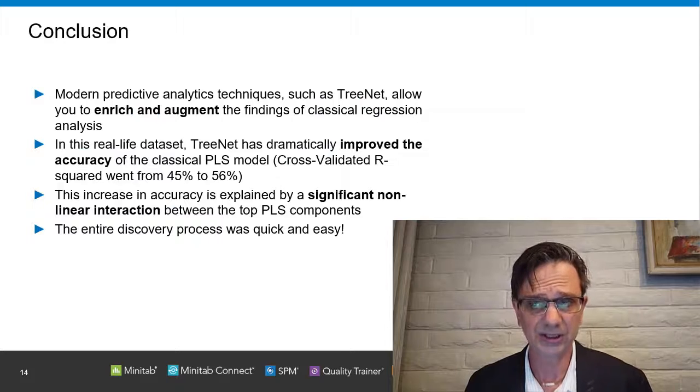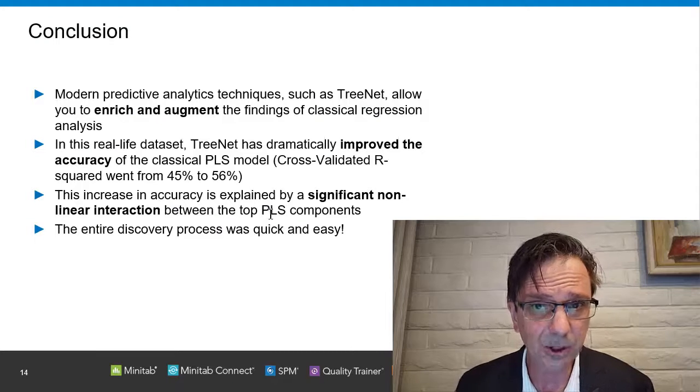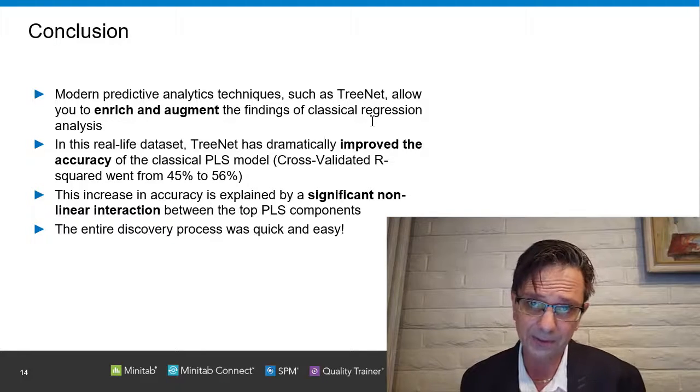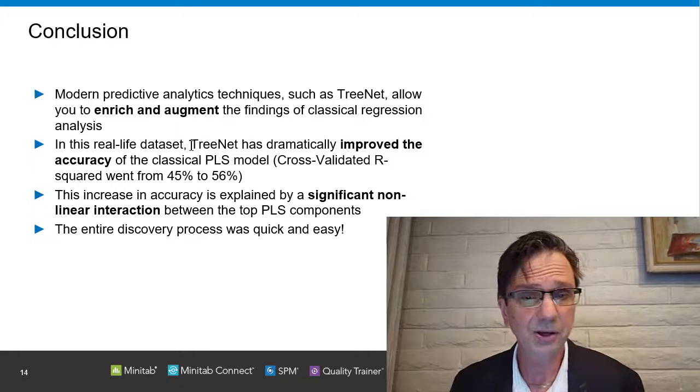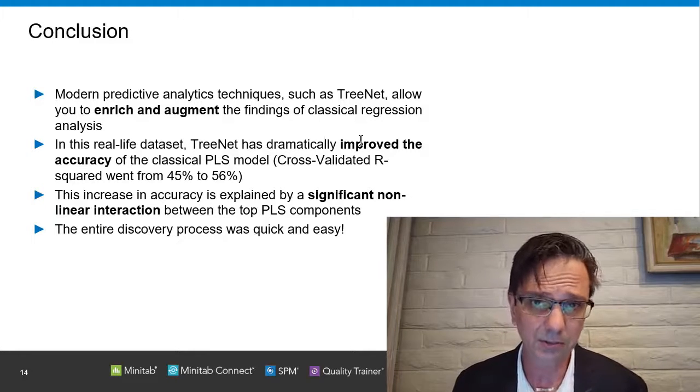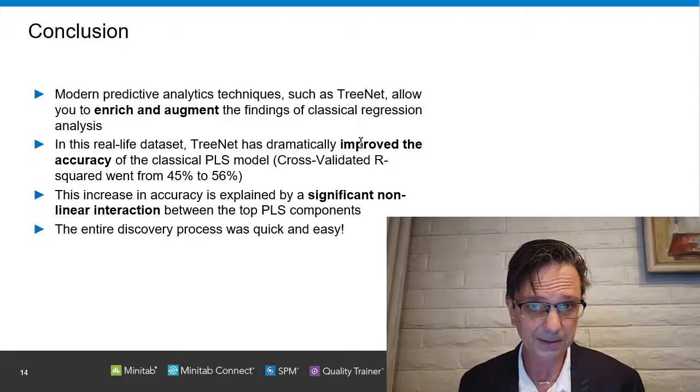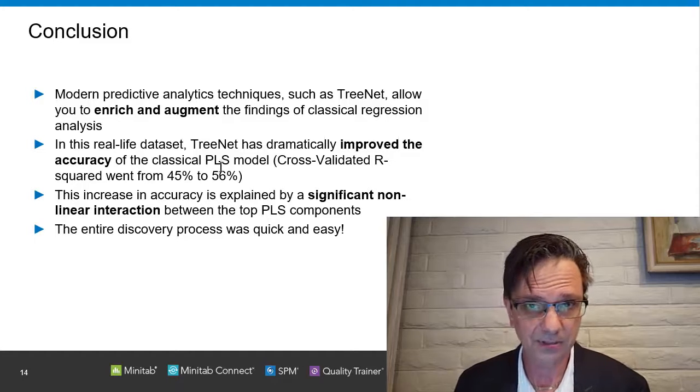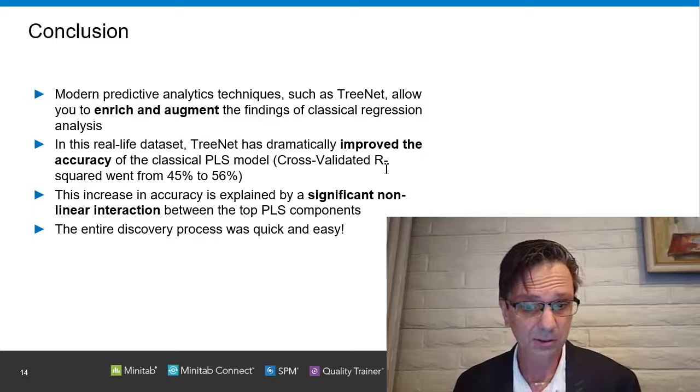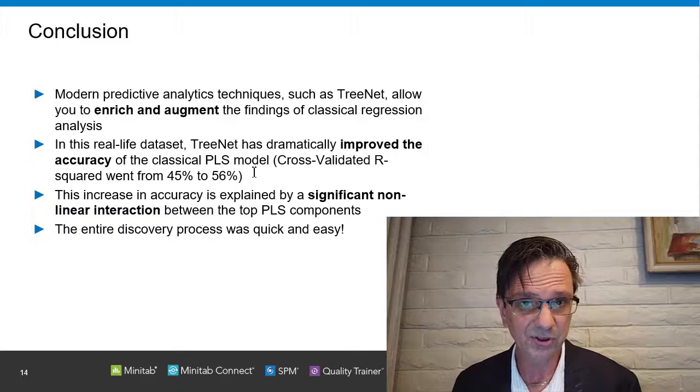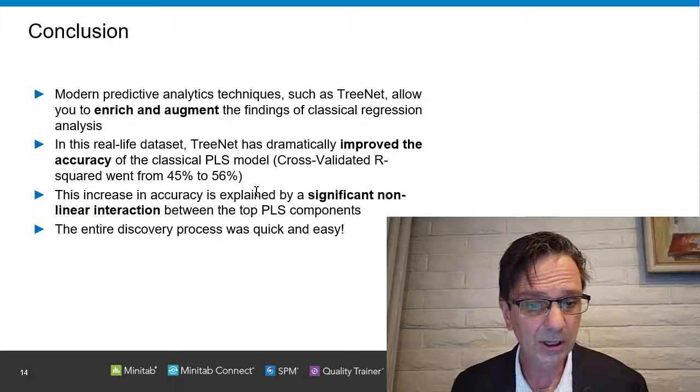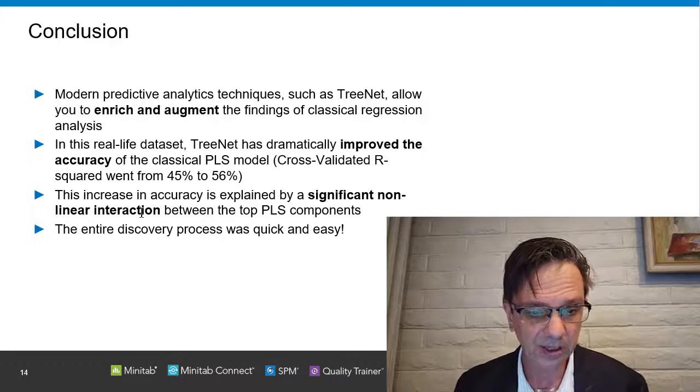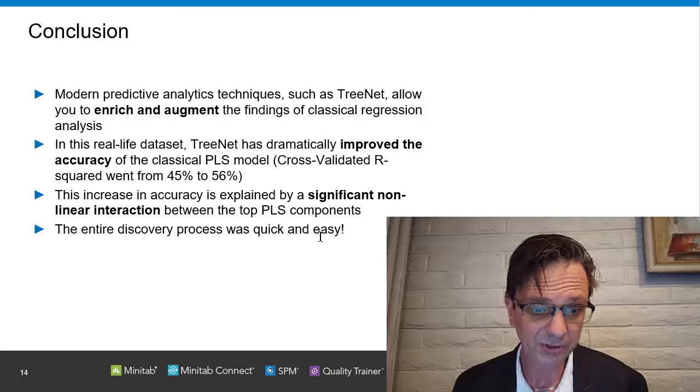And yet, at the same time, I took advantage of the PLS to derive all of these important scores that you can look at how they are constructed and everything. You can study the loadings and all the other things. And on top of that, I've actually identified very cool nonlinearities and interactions. So to summarize our findings in conclusion, what we've realized is that the modern predictive analytics techniques, such as TreeNet, and this is what I would recommend you start with on this class of applications, they allow to enrich and augment the findings of classical regression analysis, including PLS. Like in this particular data set, it's a real-life data set, TreeNet has dramatically improved the accuracy of the classical PLS model. When you saw it, the cross-validated R-squared went from 45 to 56%. That's a significant increase. And this increase in accuracy is explained by significant nonlinear interaction between the top or among the top PLS components.